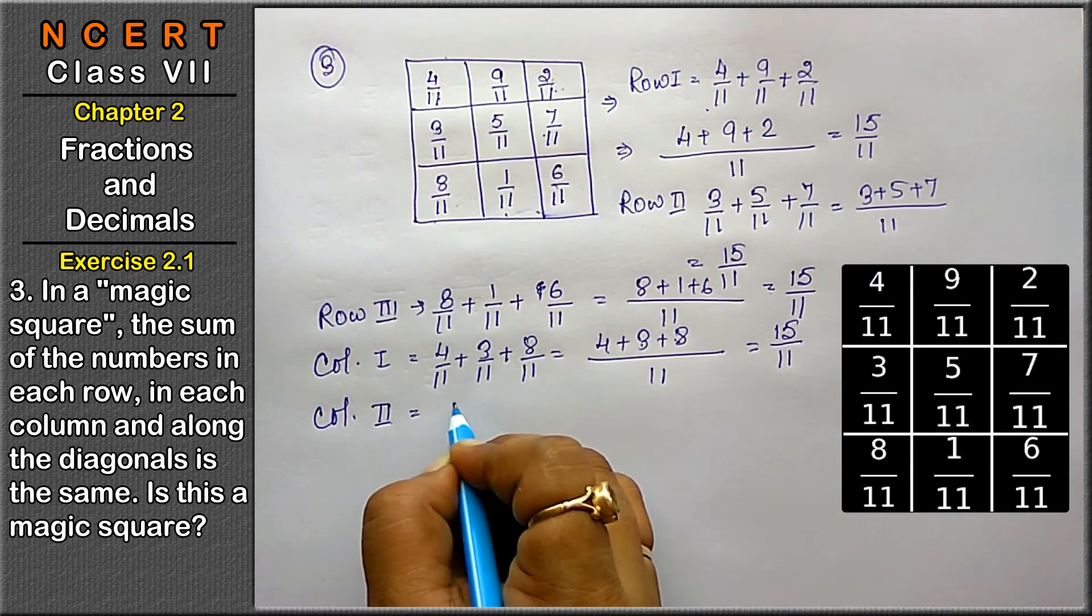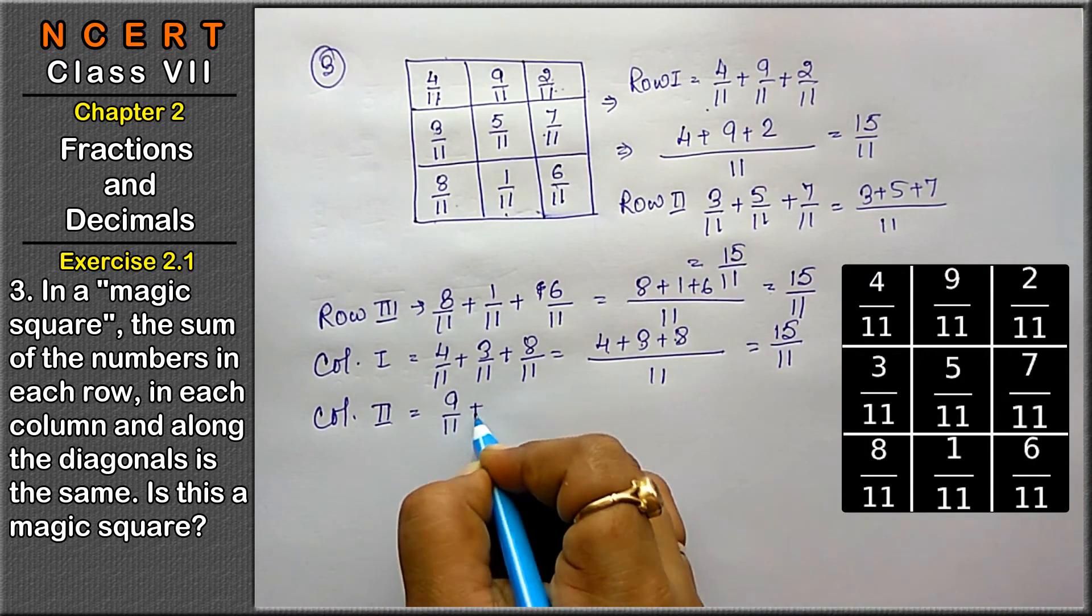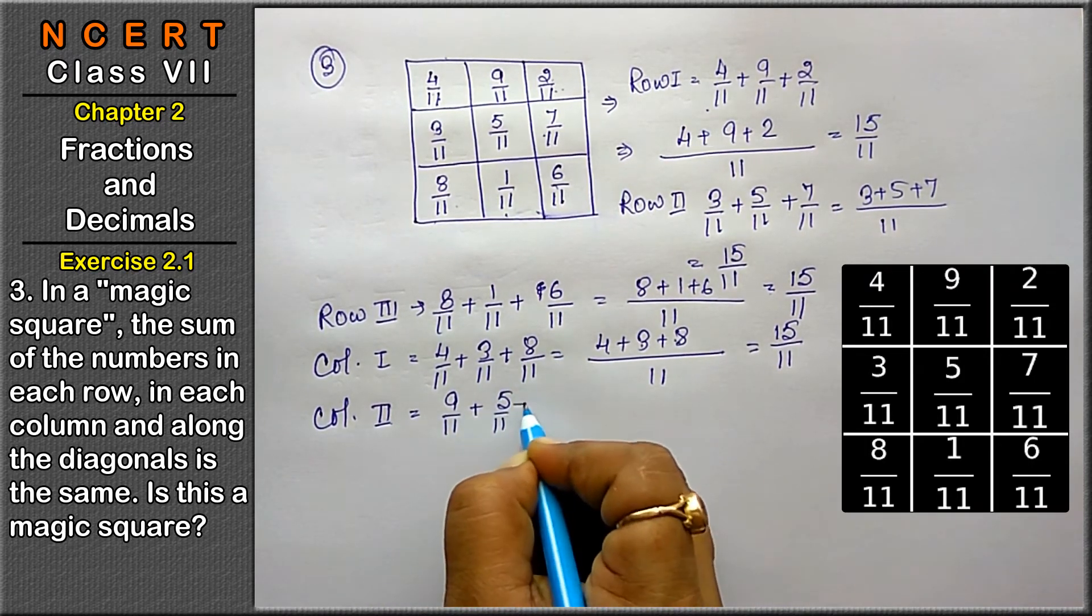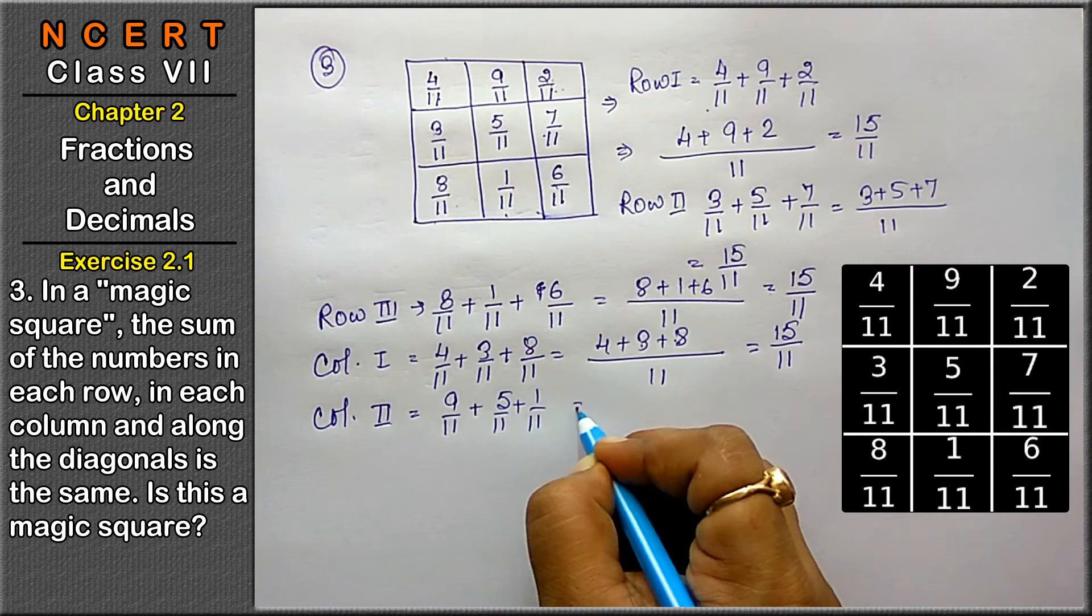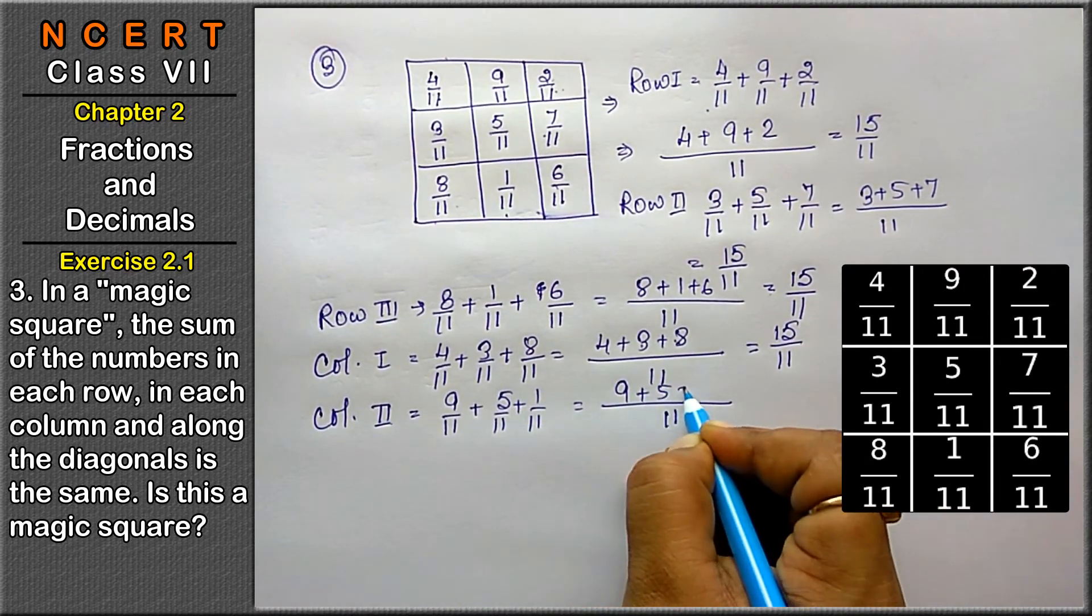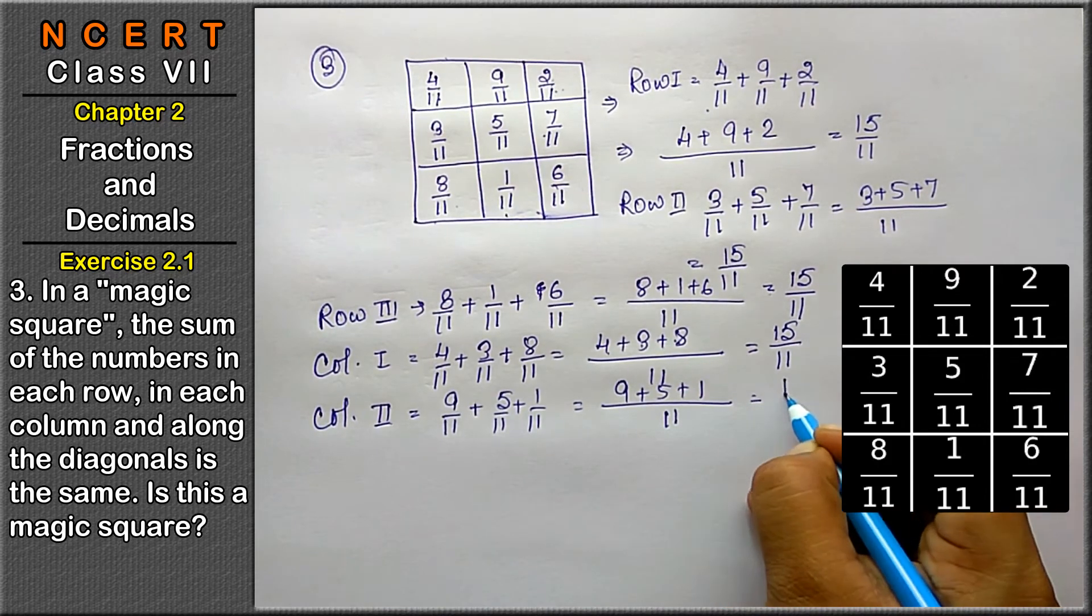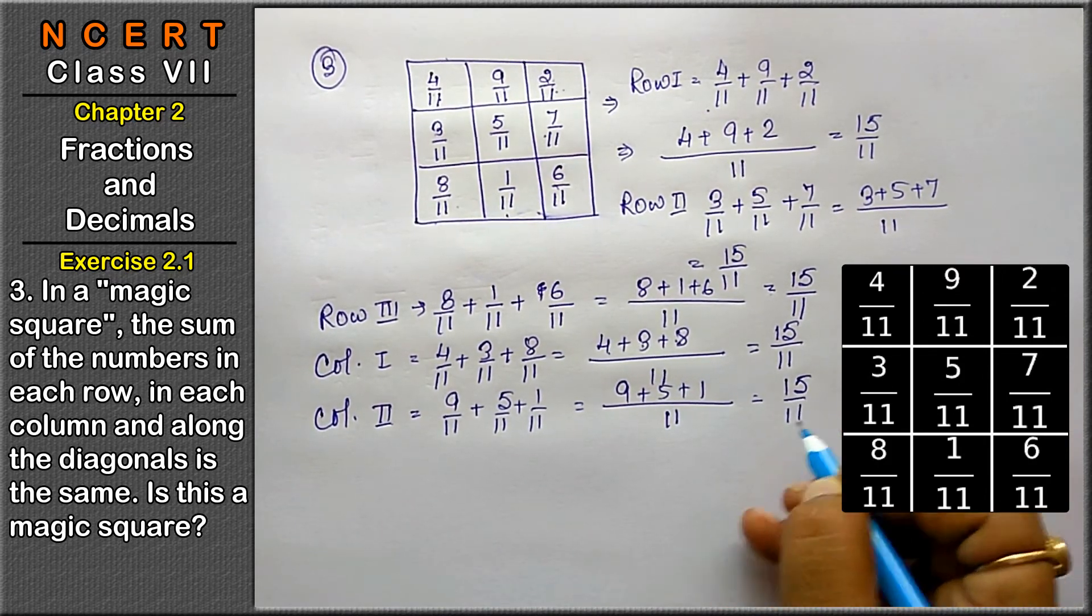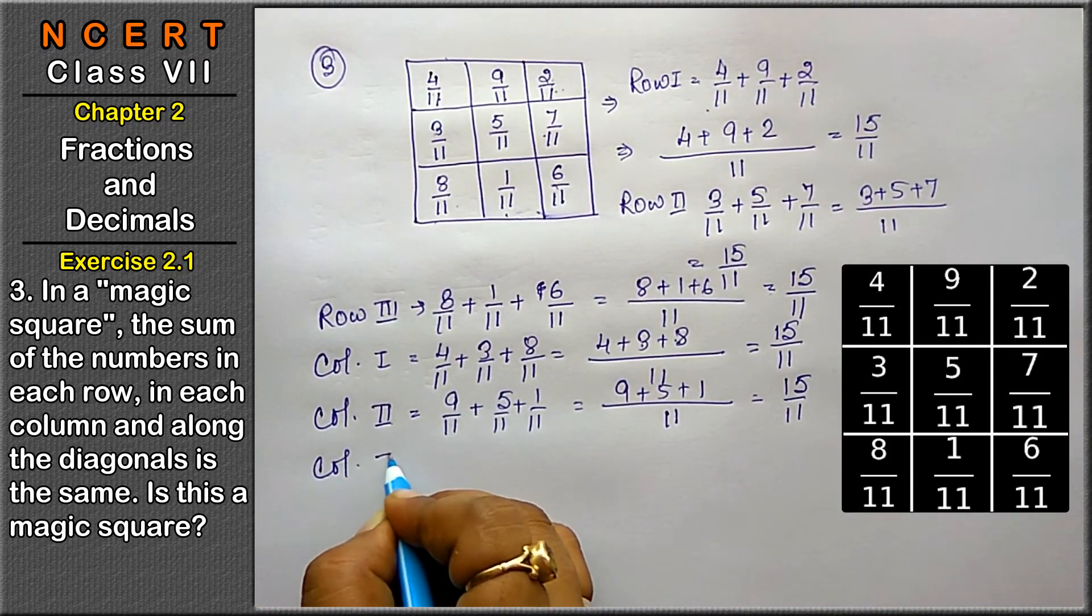Column second is 9 upon 11 plus 5 upon 11 plus 1 upon 11. Let's take the LCM 11. 9 plus 5 plus 1, that means 15 upon 11. Let's see the column third.